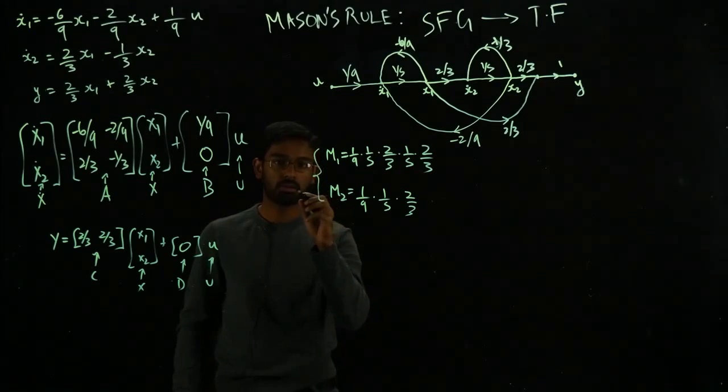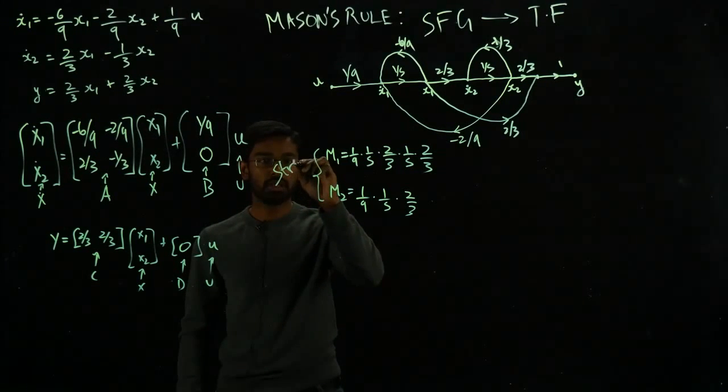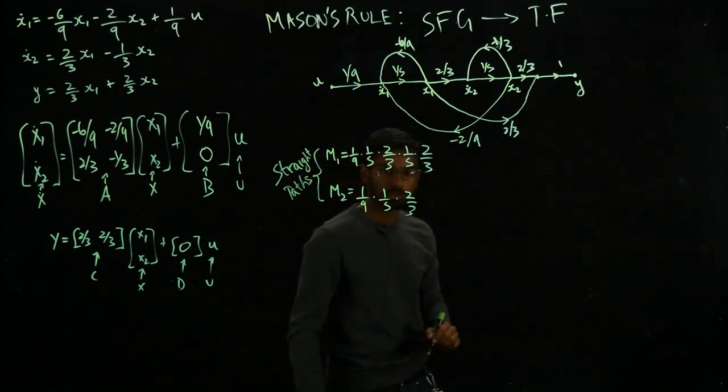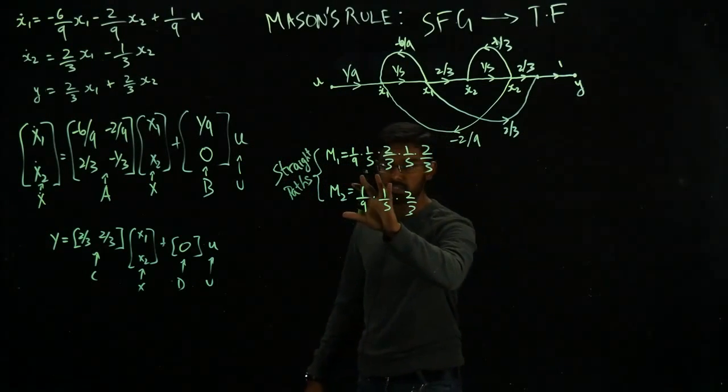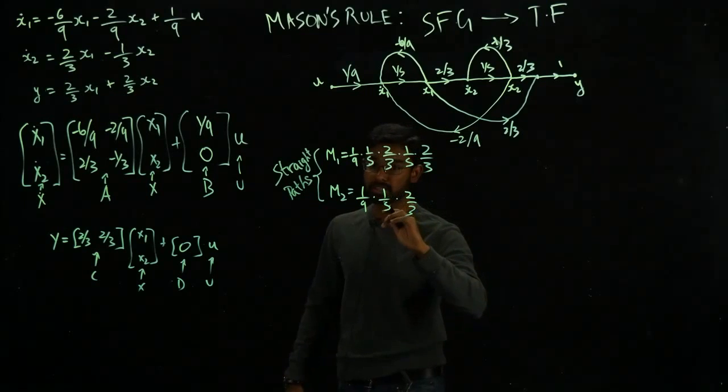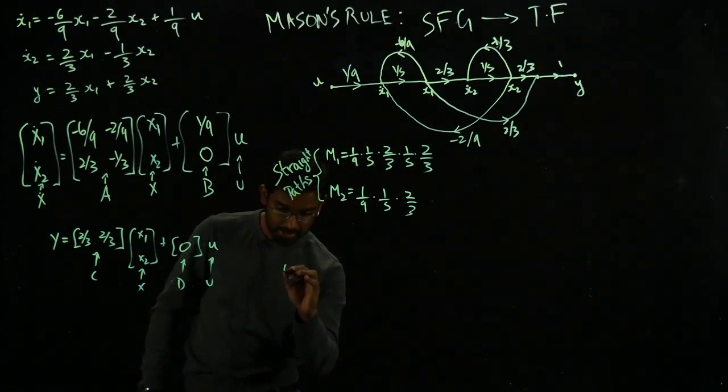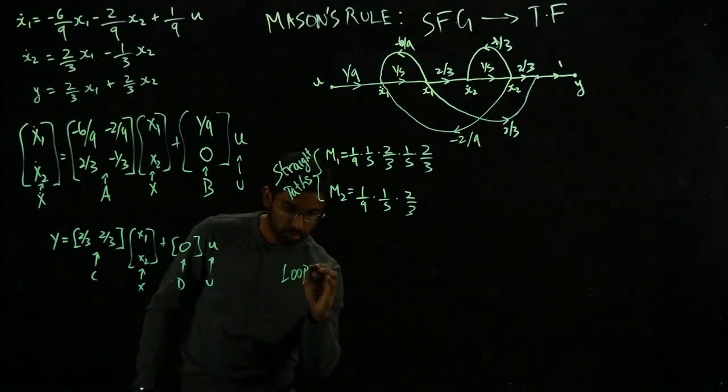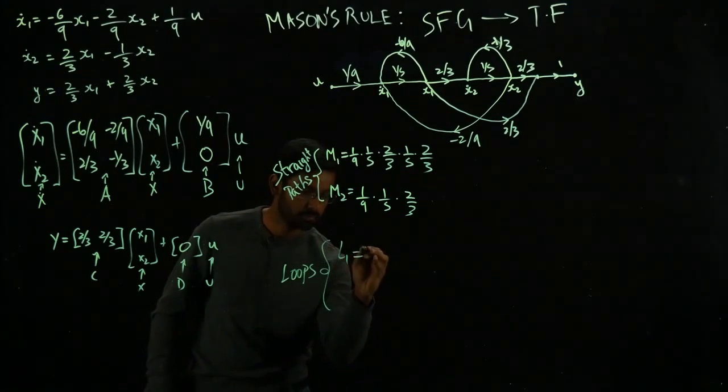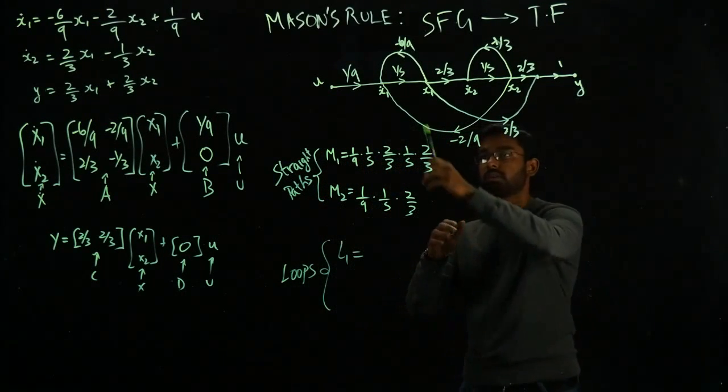These guys are straight paths. These two are quantities that I need for my Mason's rule. And I'm going to look at loops now. What are the different loops I have?